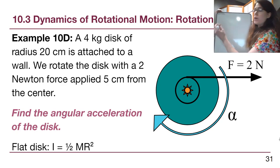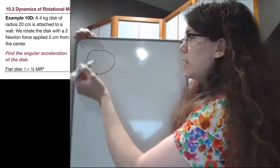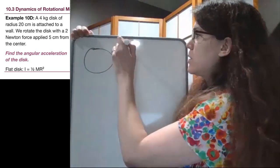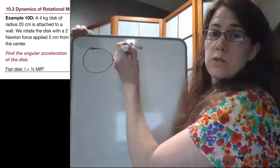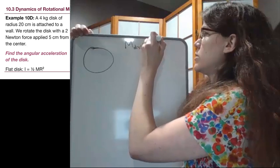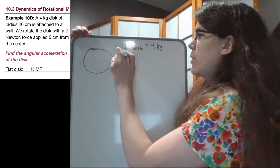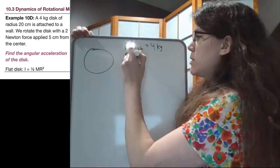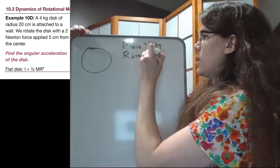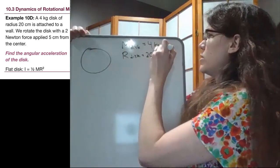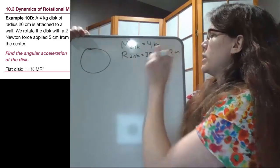Okay, so we have a disc, so we can draw that disc, where the mass of the disc we're told is 4 kilograms, and the radius of the disc is 20 centimeters, and right away we want to tell ourselves that's 0.2 meters. We can divide by 100.